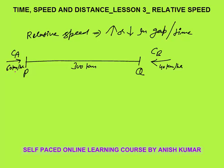At 9am in the morning, Car A is at P and Car B is at Q. Both are moving simultaneously. The first thing to understand is whether the gap will increase or decrease. Definitely, the gap between these two cars will decrease. How much decrease will there be per unit of time — that is what we need to calculate.